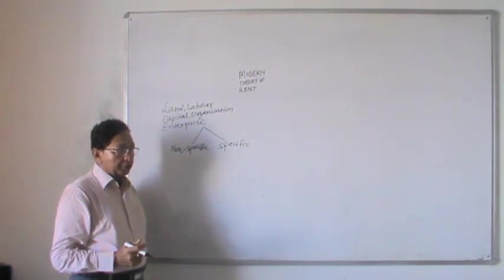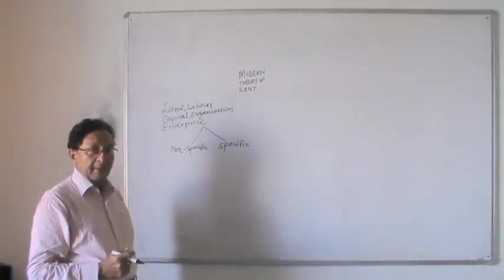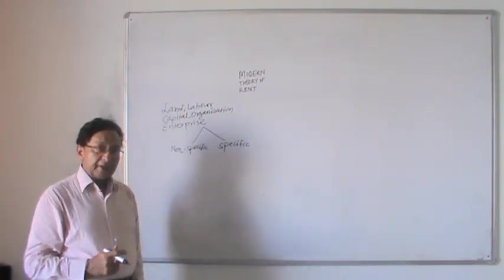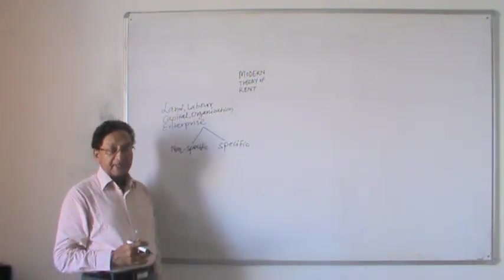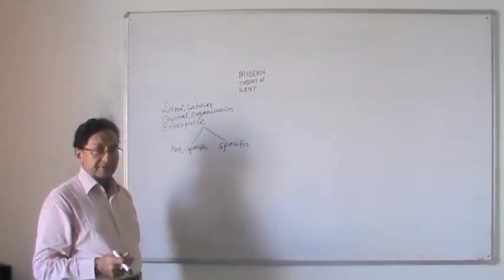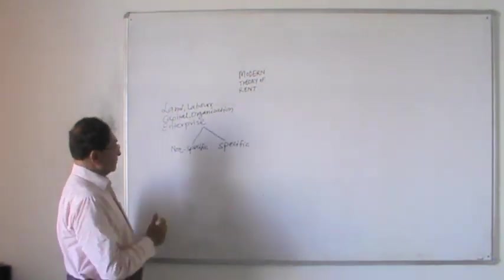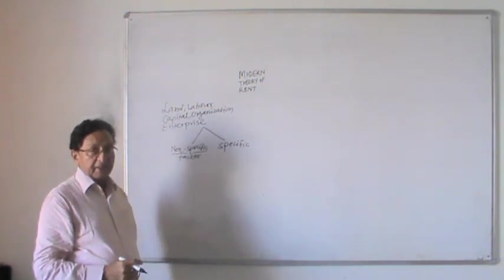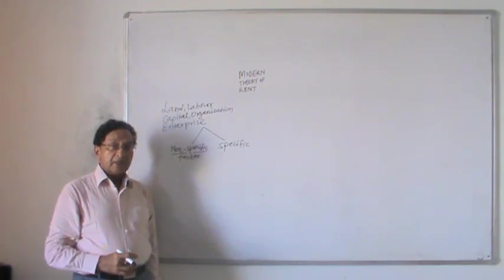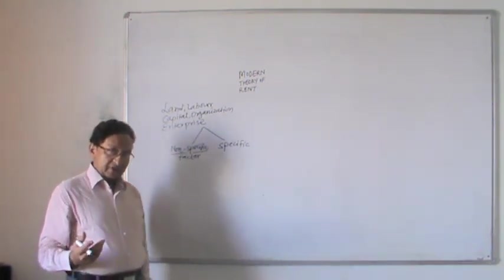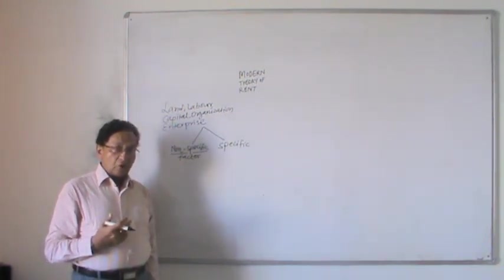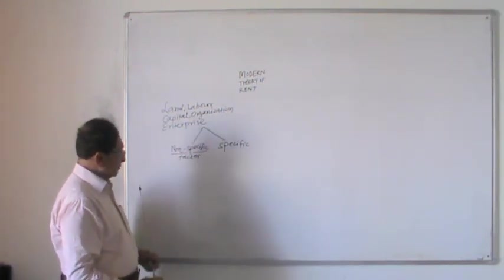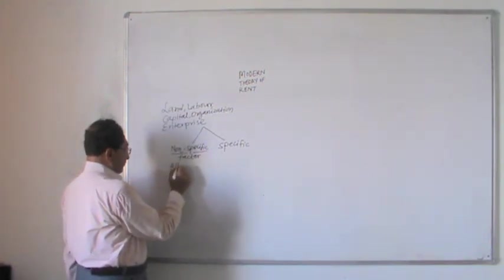For example, capital of rupees 2 lakhs can be invested in a fixed deposit or it can be invested in tax-free bonds issued by the Government of India. When capital has many alternatives, it is a non-specific factor. Similarly, an engineer working as an organization may have 2 or 3 job offers — this means he is a non-specific factor, because a number of opportunities are available. A non-specific factor is one where alternatives are available.